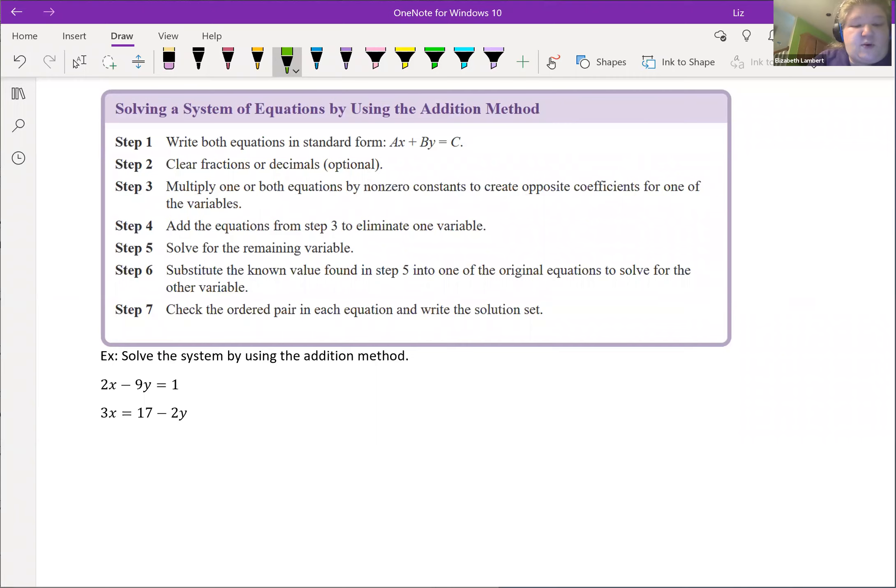I need it to be x's and y's on one side in order, number on the other. So 2x minus 9y equals 1, good. 3x equals 17 minus 2y, nope. So we need that 2y back on the other side so I'm going to add it over and then I'm going to write them both here.